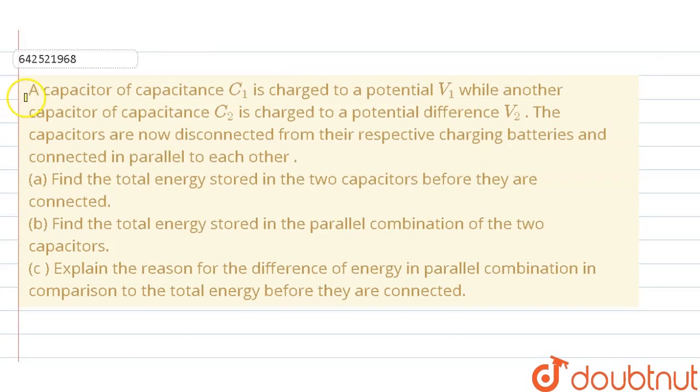Hello everyone, let's start with the question. The question says that a capacitor of capacitance C1 is charged to a potential V1, while another capacitor of capacitance C2 is charged to a potential difference V2.